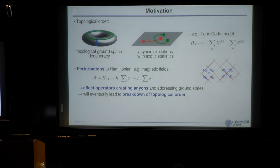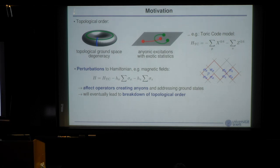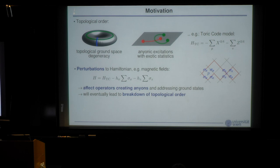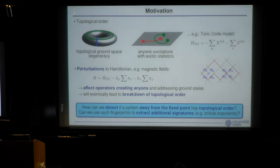What I really want to study is what happens when we move away from the toric code by adding a perturbation — and this doesn't have to be small, it just moves us away from the fixed point. This changes the physics considerably: the string operators that create pairs of anyons become more complicated. Eventually there will be a phase transition where topological order breaks down, and we may also want to understand the nature of that transition — the critical exponents, universality class, and so on.